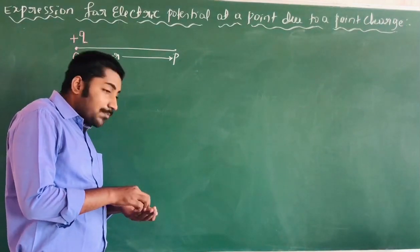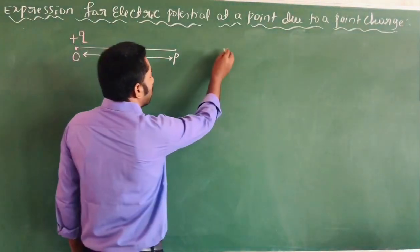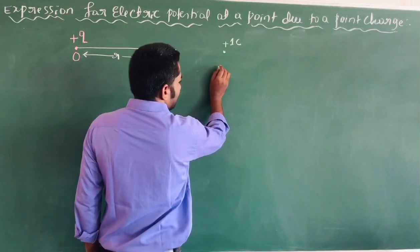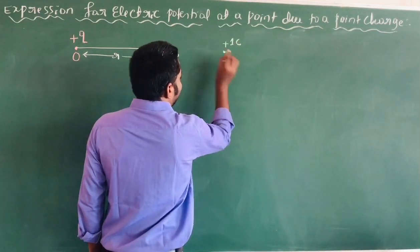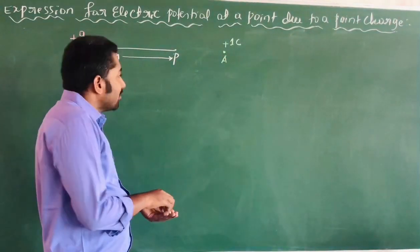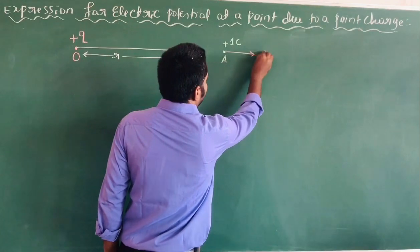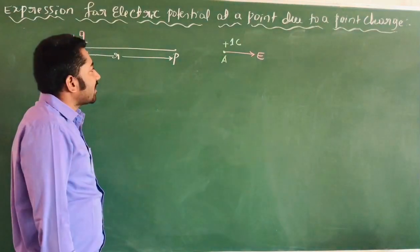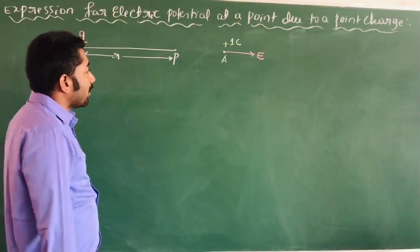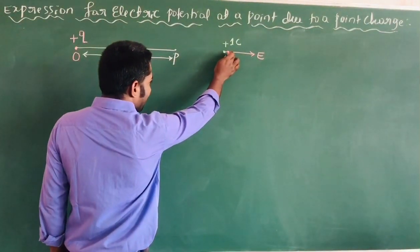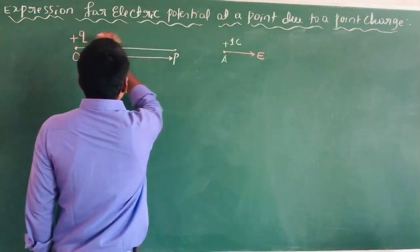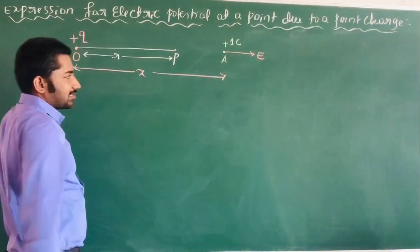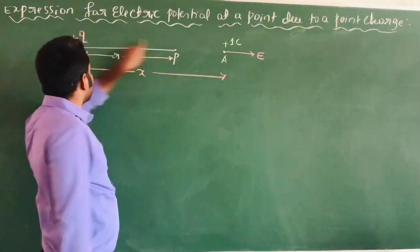Consider another point A, where one coulomb of unit positive charge is placed at point A. E is the electric field. To find the electric potential at point P, the electric field is produced at point A due to this point charge. Here, X is the distance from the unit positive charge to the point charge.